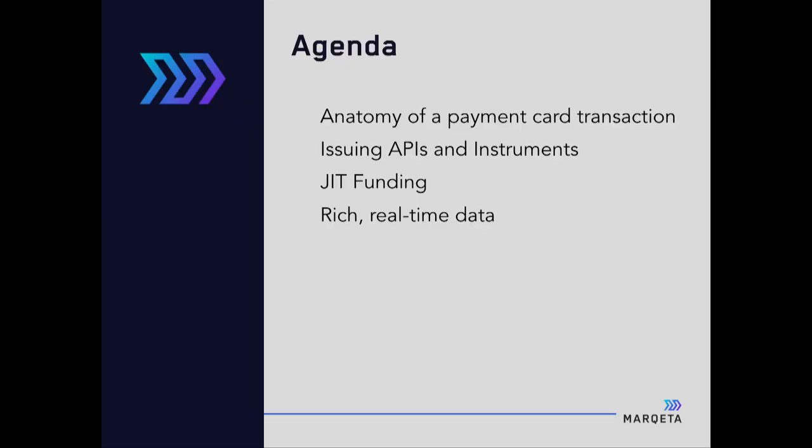Today I want to talk about modern access to issuing payment cards and authorizing transactions. I want to break down the anatomy of a payment card transaction and show you what's going on. Then I'm going to go into a set of APIs that allow you to work with diverse payment instruments, because today payment cards aren't just physical cards with mag stripes. I want to talk about a unique feature from Marqeta called JIT funding, where you can start authorizing your own transactions, and also how to get rich data in real time.